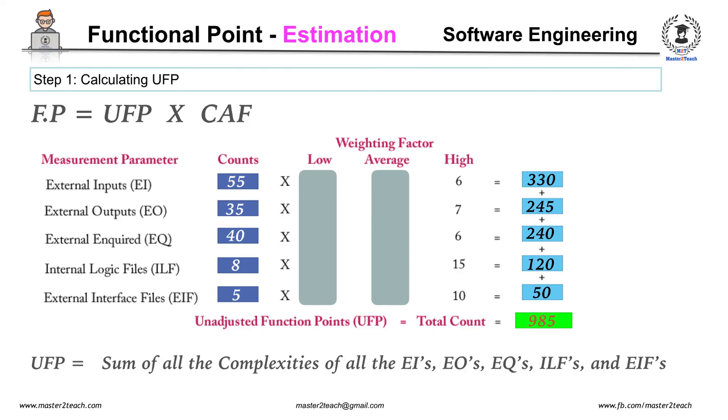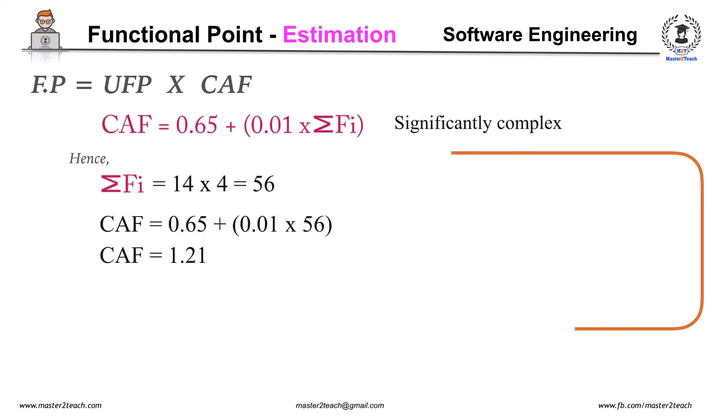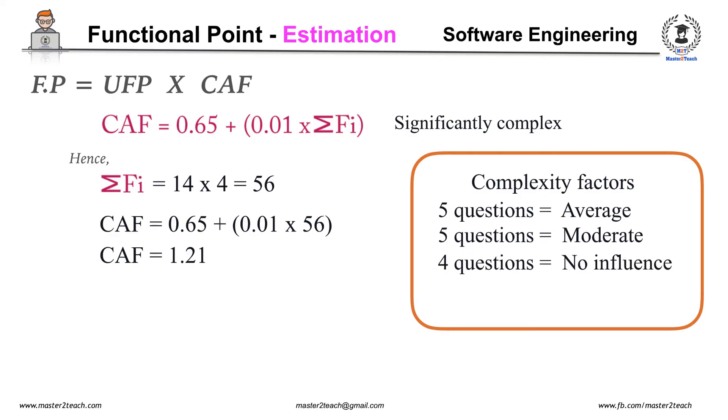Now moving to calculate CAF Complexity Adjustment Factor. CAF equals 0.65 plus 0.01 times summation Fi. Here we are required to calculate all 14 complexity factors as significantly complex. Hence summation Fi equals 14 times 4 equals 56. Therefore CAF equals 1.21. What if complexity factors of 5 questions are average, 5 questions are moderate, and 4 questions are no influence? Then summation Fi equals 5 times 3 plus 5 times 2 plus 4 times 0, which equals 25.